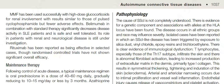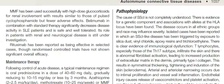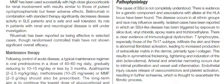There is clear evidence of immunological dysfunction. T lymphocytes, especially those of the Th17 subtype, infiltrate the skin, and there is abnormal fibroblast activation leading to increased production of extracellular matrix in the dermis, primarily type 1 collagen. This results in symmetrical thickening, tightening, and induration of the skin — scleroderma. Arterial and arteriolar narrowing occurs due to intimal proliferation and vessel wall inflammation. Endothelial injury causes release of vasoconstrictors and platelet activation, resulting in further ischemia, which is thought to exacerbate the fibrotic process.